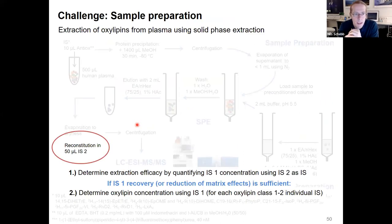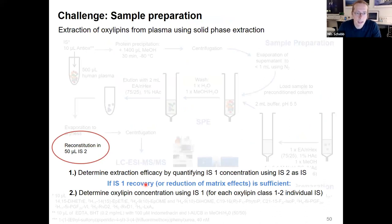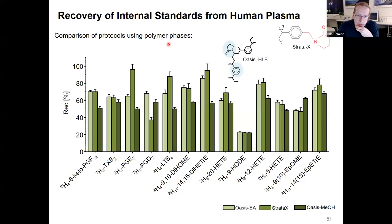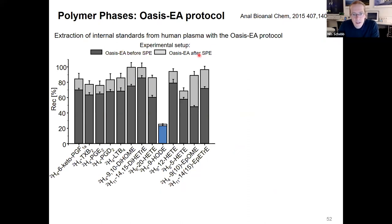One aspect I would really encourage everybody to do is to reconstitute the final extract in a second set of internal standards. You can then use this second set of internal standards to quantify the amount of internal standards in your sample and use this as a quality control for each extracted sample. When we started doing this using polymer phases for solid phase extraction, we figured out that the internal standard recovery for some internal standards, like 9-HODE, was really poor, which led us to hypothesize that this was caused by ion suppression.